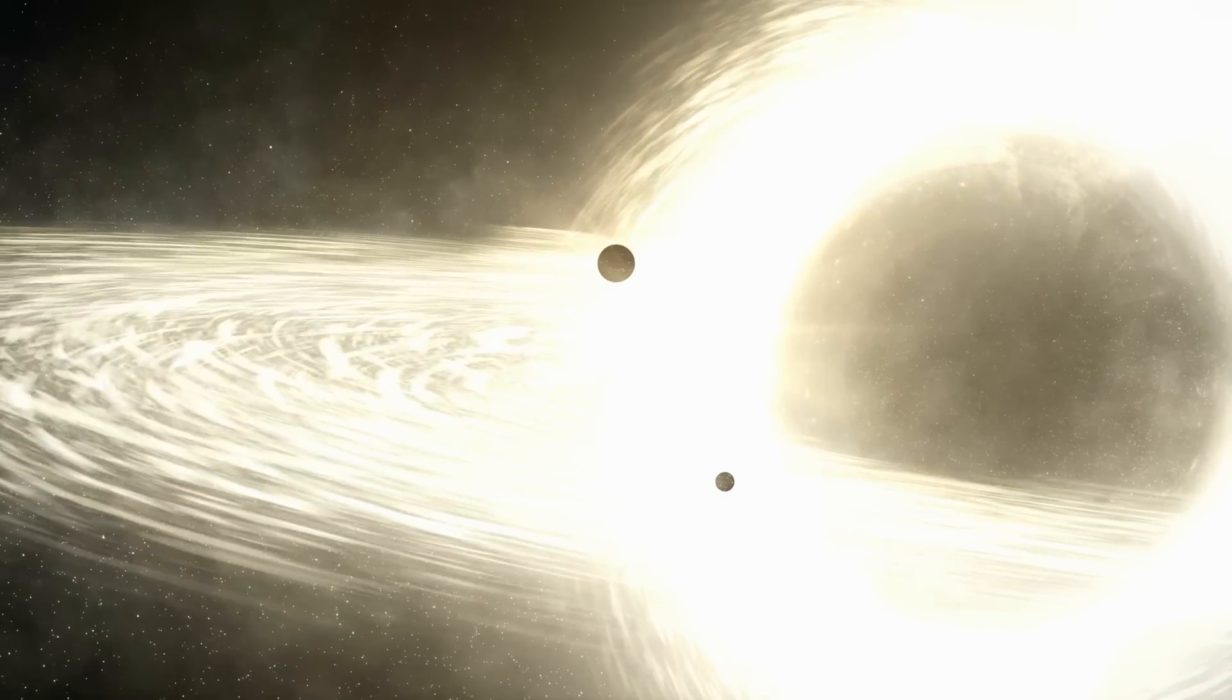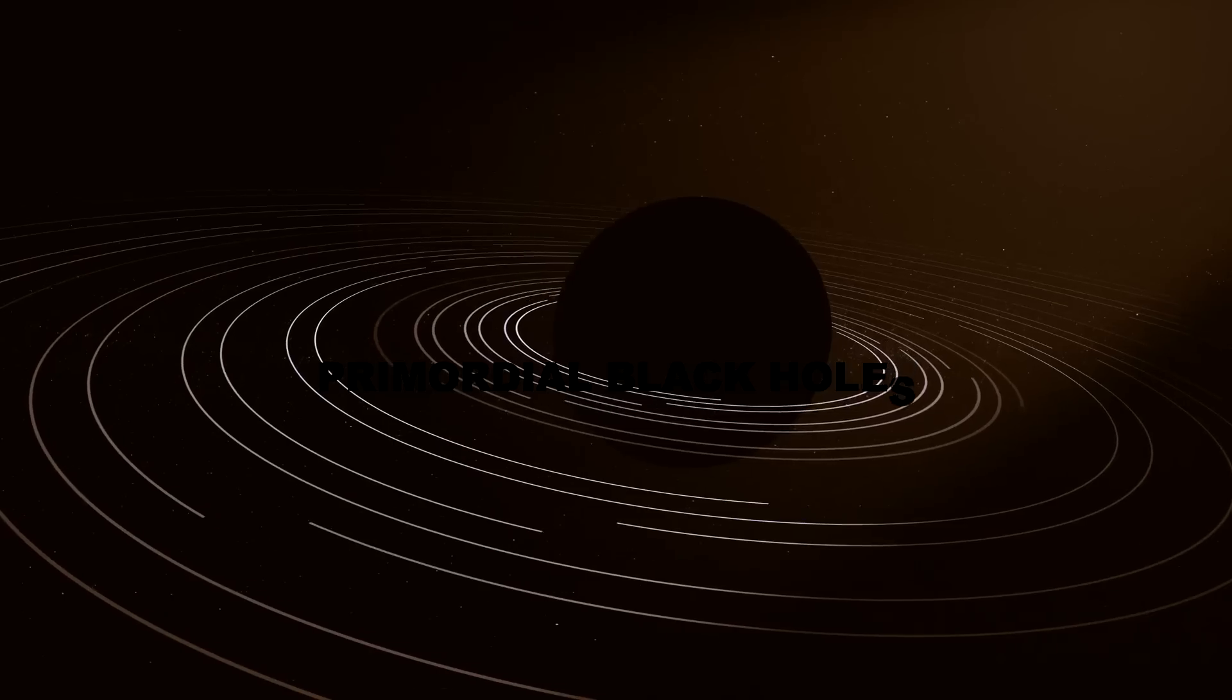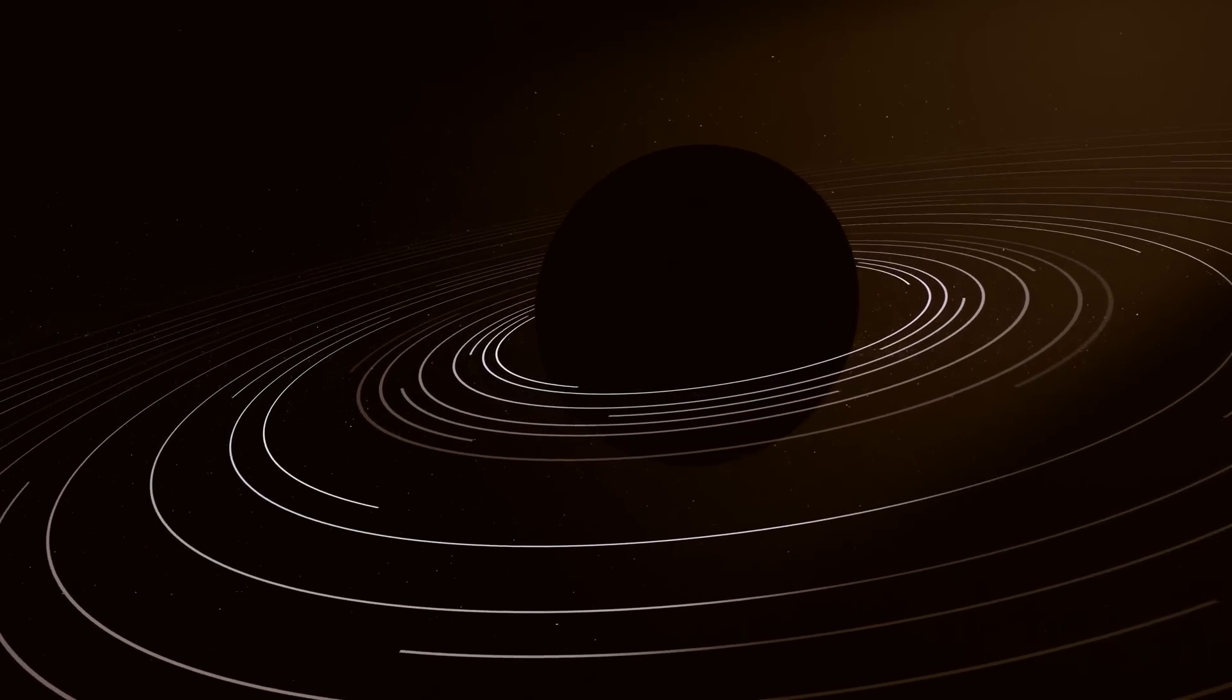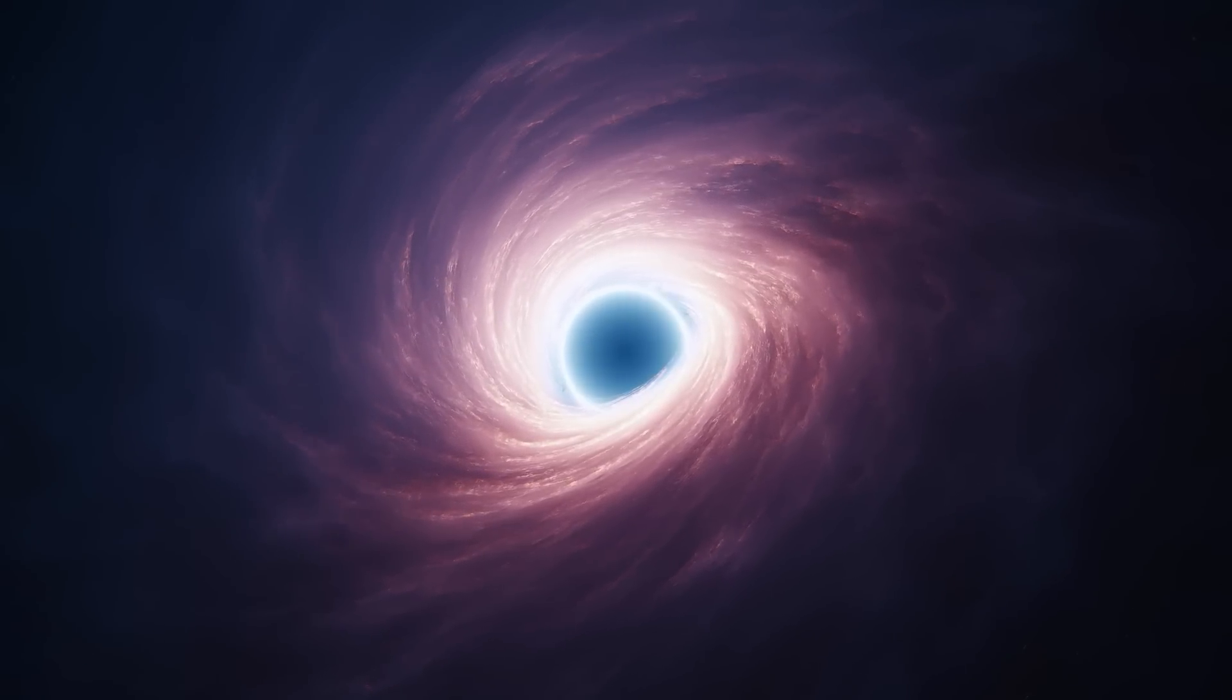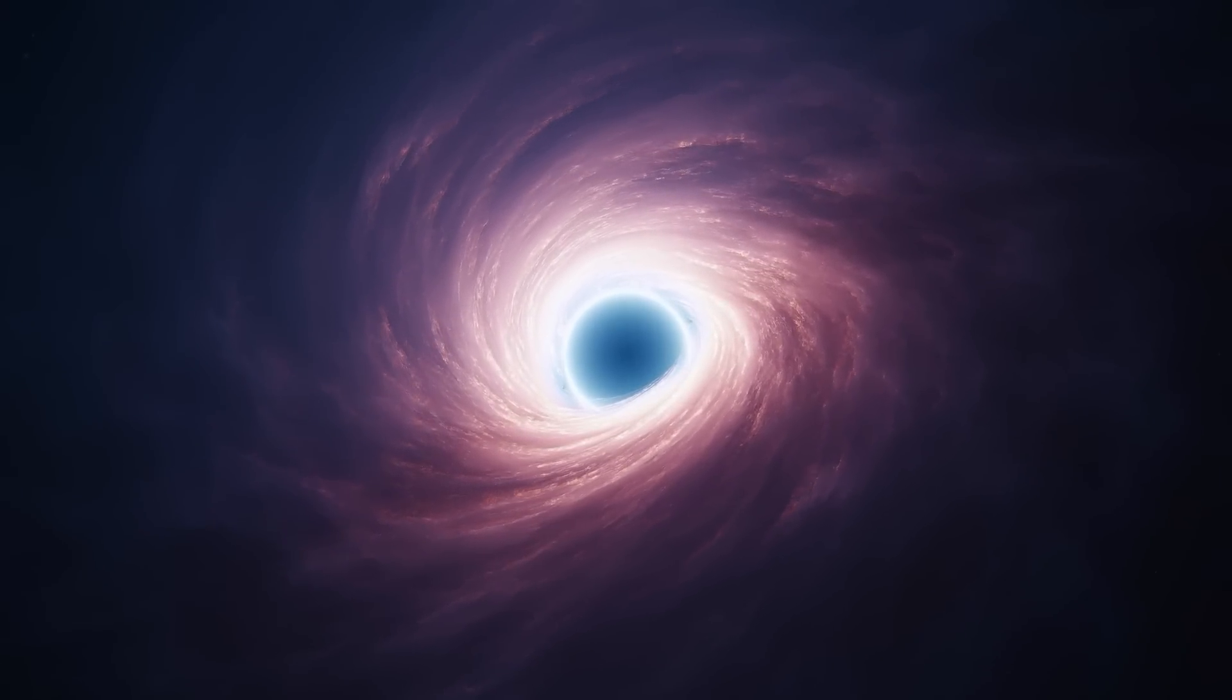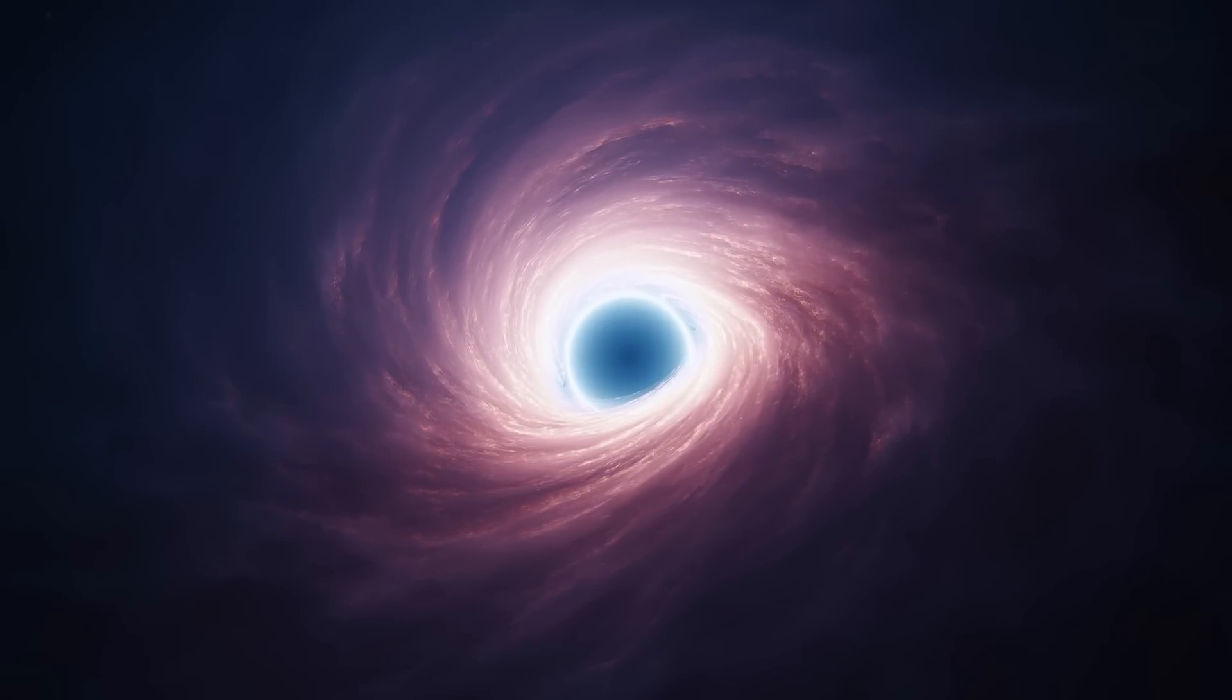The final theory proposes that these black holes began as primordial black holes, tiny objects that may have existed immediately after the Big Bang or even before. If this theory holds true, it would raise more questions than answers, but it would provide a possible explanation for how these ancient black holes accumulated such massive masses.